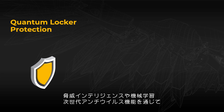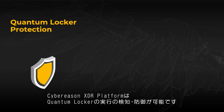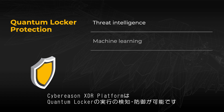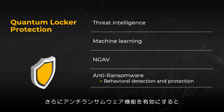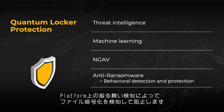The Cybereason XDR platform is able to detect and prevent the execution of Quantum Locker using threat intelligence, machine learning, and next-gen antivirus capabilities. Additionally, when the anti-ransomware feature is enabled, behavioral detection techniques in the platform are able to detect and prevent any attempt to encrypt files.